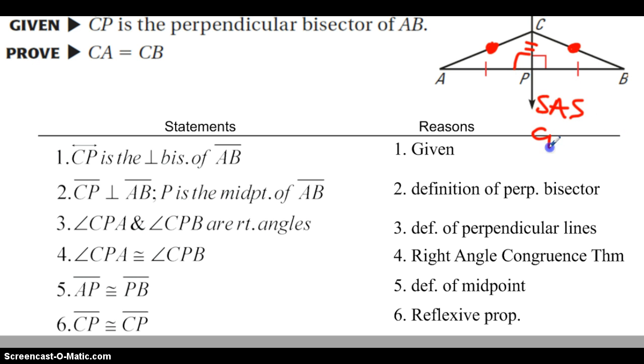And through CPCTC, which stands for corresponding parts of congruent triangles are congruent, we know that AC and CB are congruent and therefore the lengths are equal. So let's write that all out.